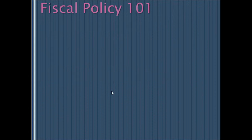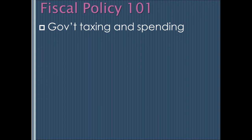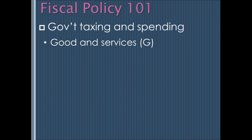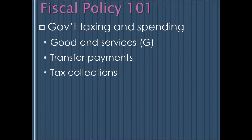When it comes to fiscal policy, the government is talking about its tax and spend policies. There are three general types: the government can spend money on goods and services, it can increase or decrease transfer payments, and there are implications to the tax policy the government decides to pursue.